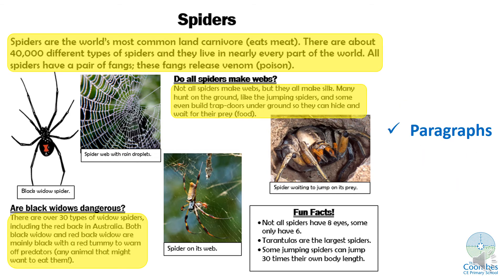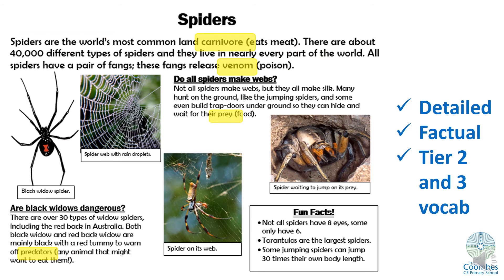It's organised into paragraphs and similar information is grouped together. It's detailed, it's factual, and I've highlighted there some Tier 2 and Tier 3 vocabulary. So all the features that we talked about earlier are present in this short report. I hope you found them all when we read it the first time.